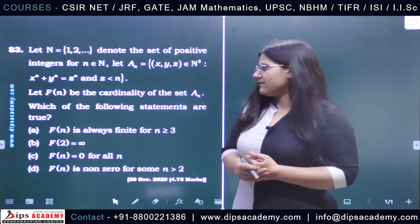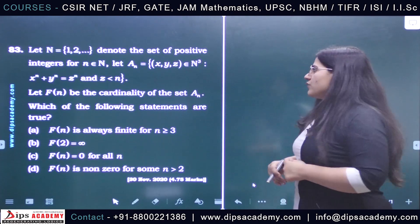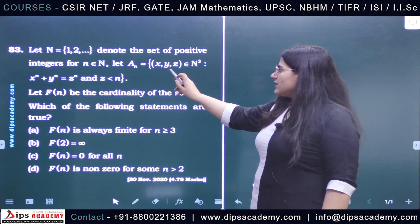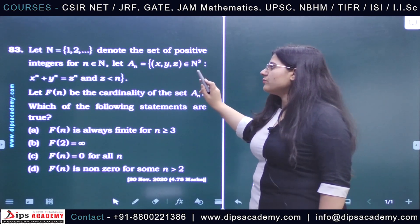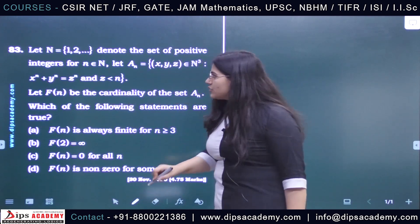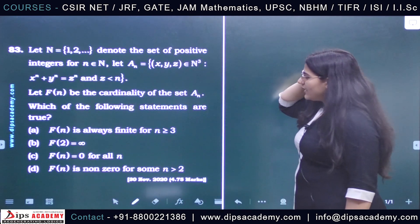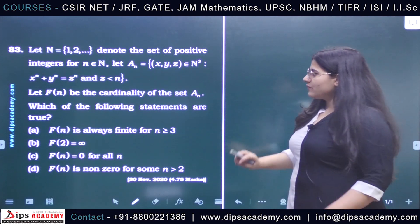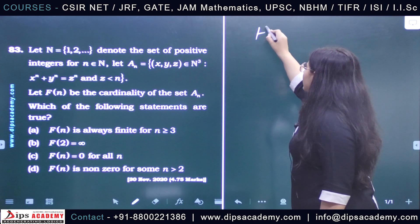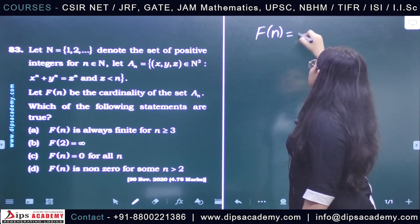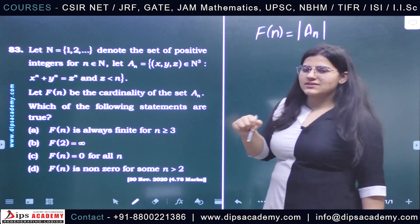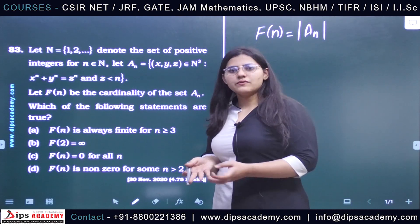In this question, we are given a set A_n which is defined for every natural number n. It contains a three-tuple from N³ such that a certain condition holds. We are going to discuss the cardinality of this set. The cardinality of A_n is defined as f(n) for every natural number n.